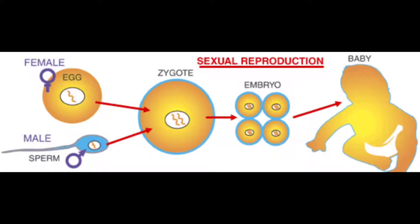In sexual reproduction, offspring inherit half of their genetic material from each parent. As a result, offspring are not identical to either parent.